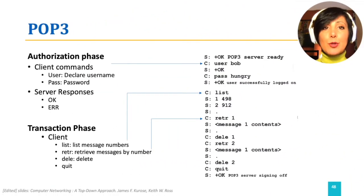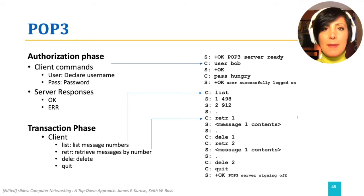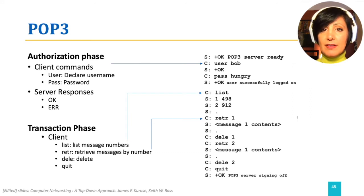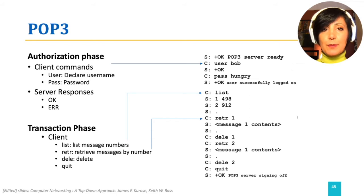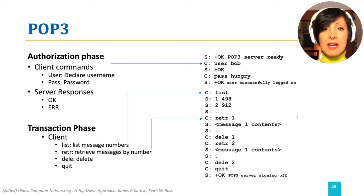POP3, Post Office Protocol version 3, is the simplest mail access protocol. It is a command-and-response protocol that enables the client to log in using a username and password to the mail server, and then list or retrieve the emails waiting in the mailbox. POP3 is limited in that it does not have stateful transactions and does not support message saving, foldering, or organization at the server. This figure shows a sample POP3 interaction to first list, then retrieve and delete the listed emails one by one.